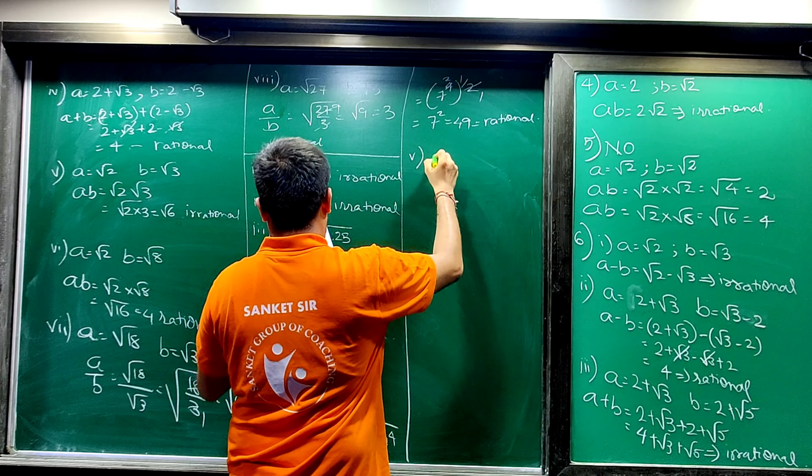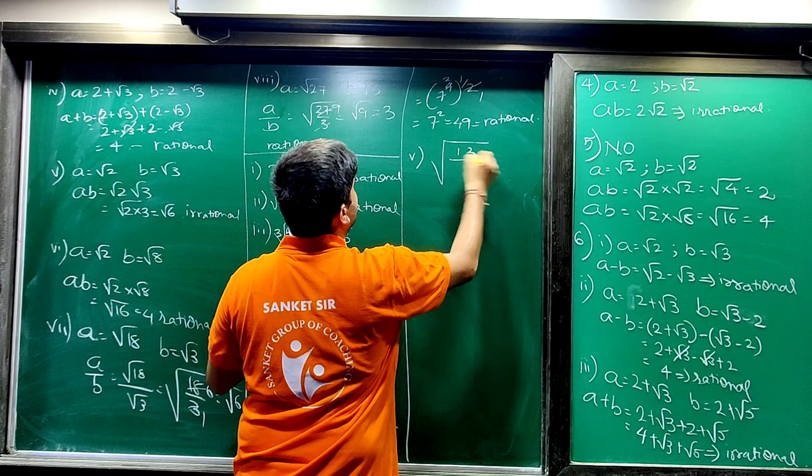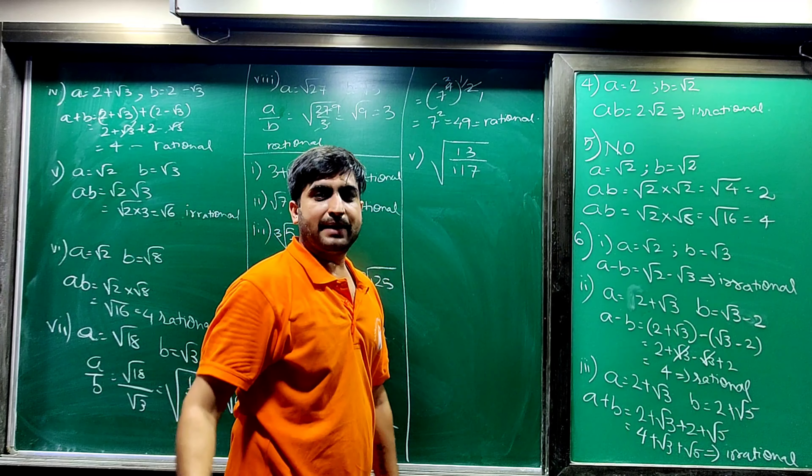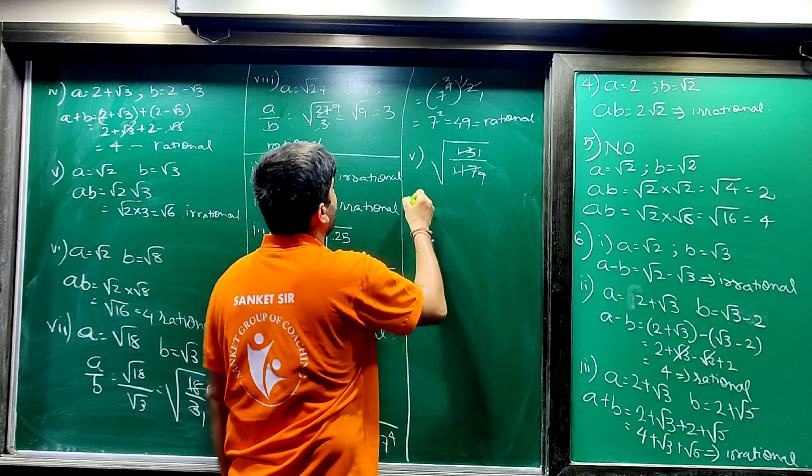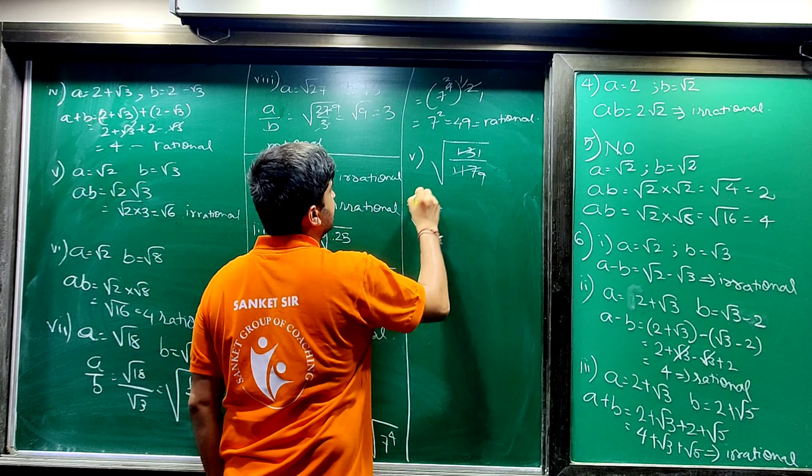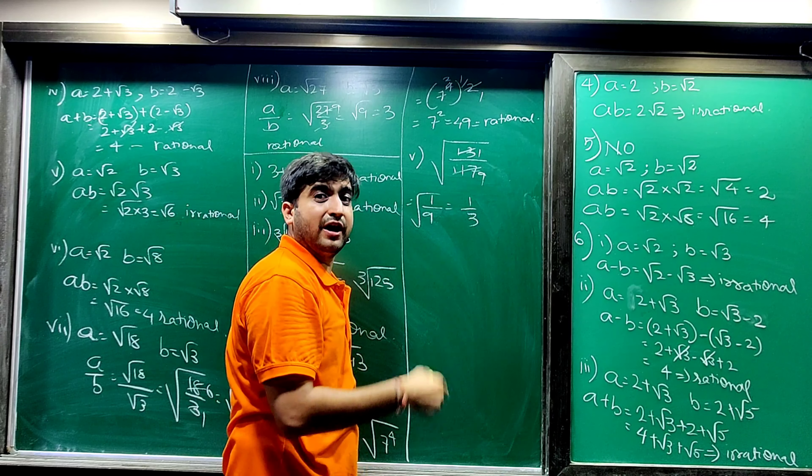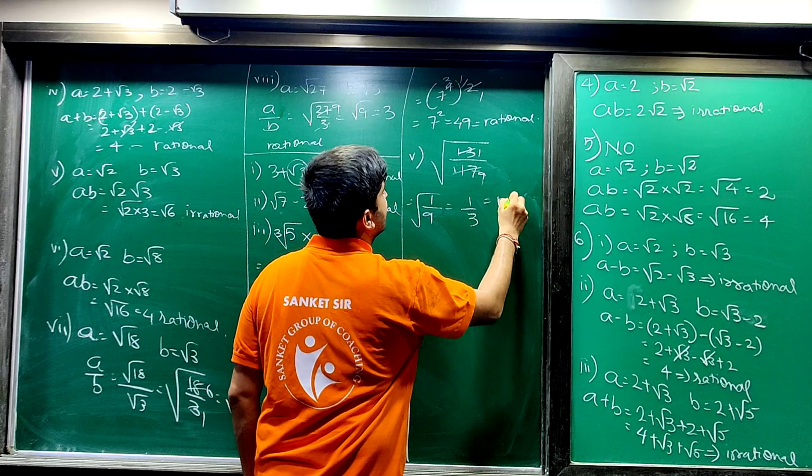The next, fifth: 1 upon 9, under root. The answer is 1 upon 3. Again, this is a rational number.